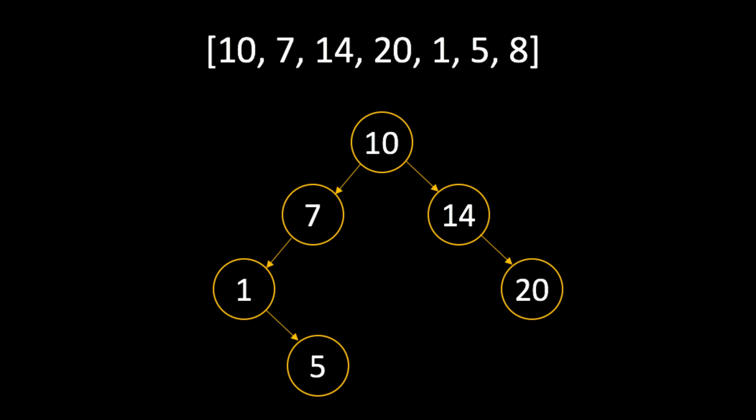With the 5 value, we compare it to the 10. Since 5 is less than 10, we traverse to the left and compare it with 7. Since we know that 5 is less than 7, we continue down the tree and compare the 5 to the 1 value. With 1 having no child nodes and 5 being greater than 1, we know to make 5 the right child of the 1 node.